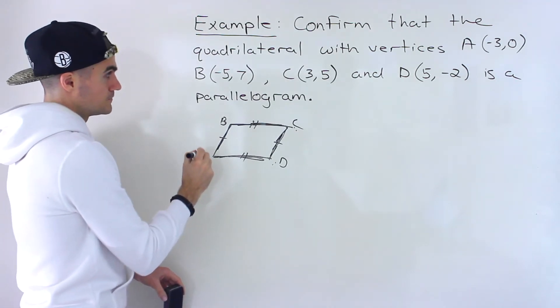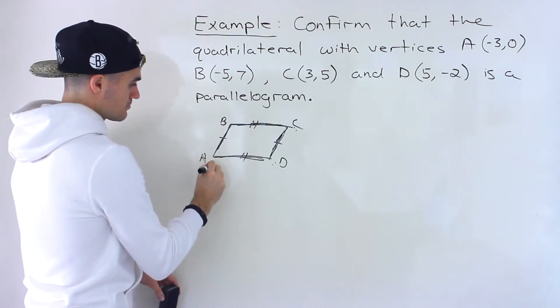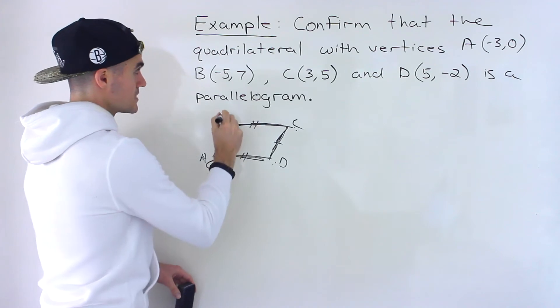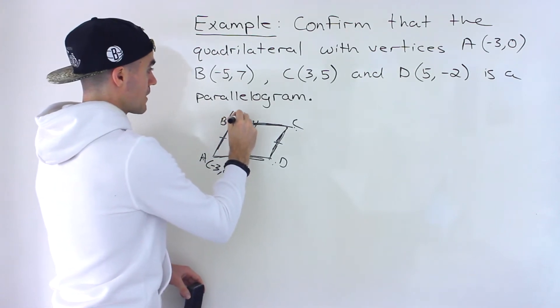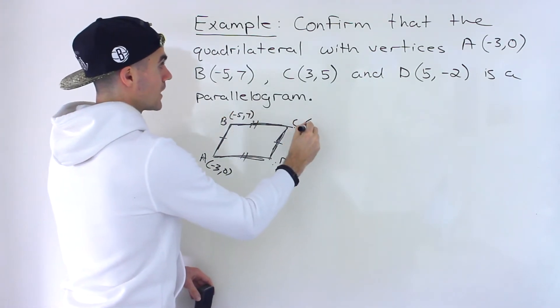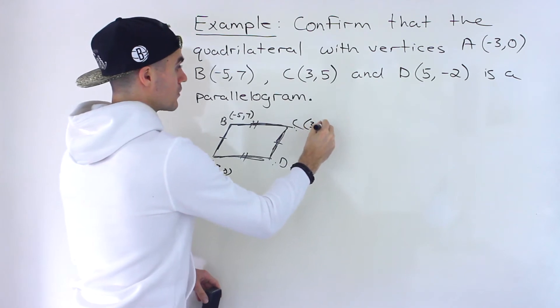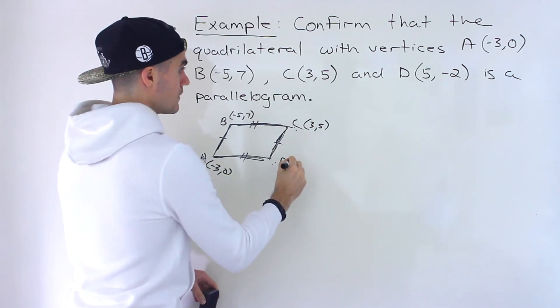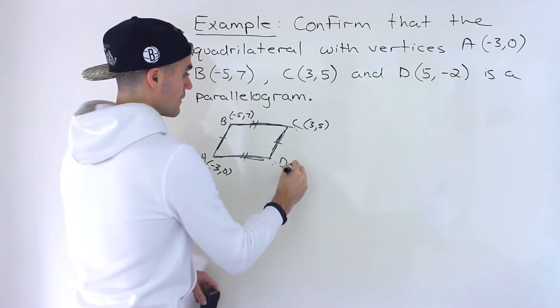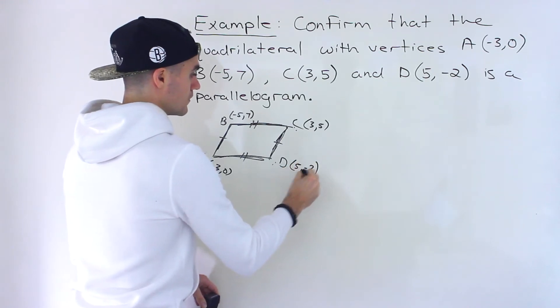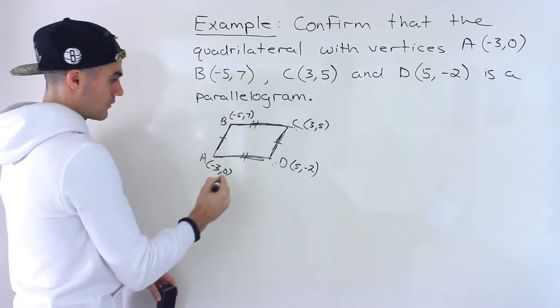Okay, so from here let's put the points. (-3,0), we got (-5,7), then we have (3,5), and then we have (5,-2).